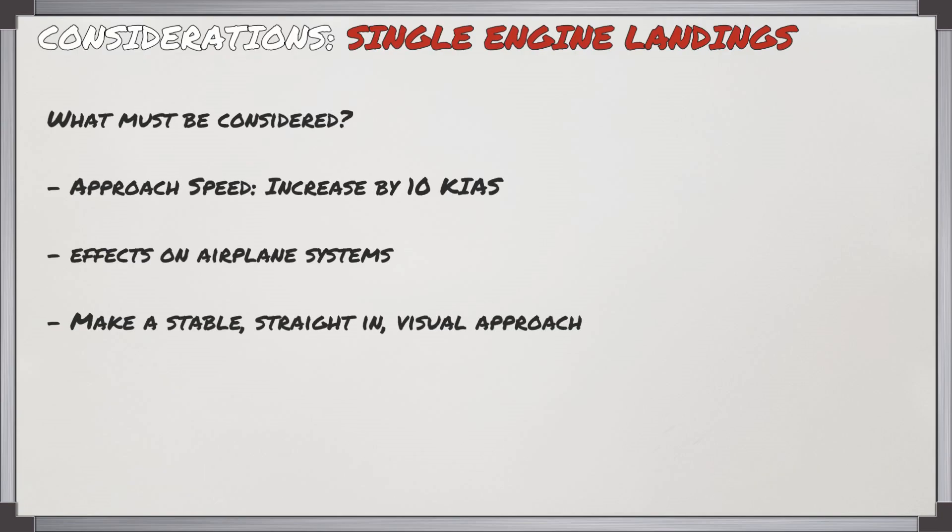Hello Virtual Pilots, it's Requiem here. In today's video we're going to look at single engine landings and the first thing we need to think about are the considerations when you're doing one. First you're going to have to worry about your approach speed - you're going to need to increase that by 10 knots. We're also going to look at the effects on airplane systems and then how to make a stable straight-in visual approach.